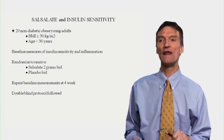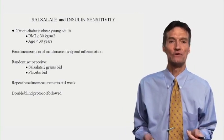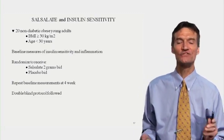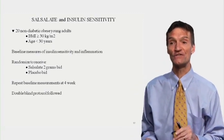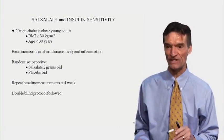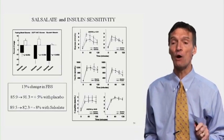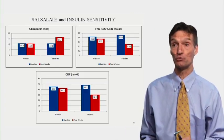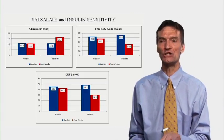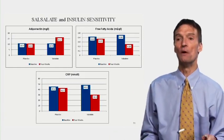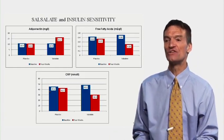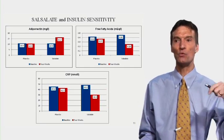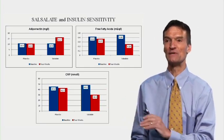We take 20 non-diabetic obese young adults — all overweight, obese, young. Baseline measures of insulin sensitivity and inflammation, randomized to receive salicylate 2 grams twice a day or placebo, repeat baseline measurements at 4 weeks. Double-blind protocol followed. Sugar rose a little with placebo therapy and fell with salicylate. Insulin sensitivity improved. Adiponectin increased. Free fatty acids fell. C-reactive protein fell a little in both groups, but fell more with salicylate because we're blocking Queen Jadis and blocking generation of inflammatory mediators.